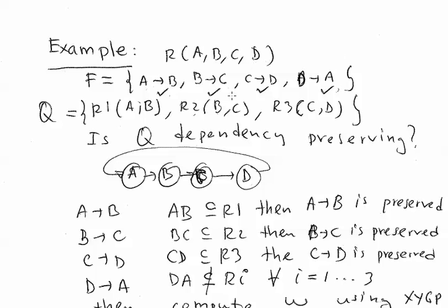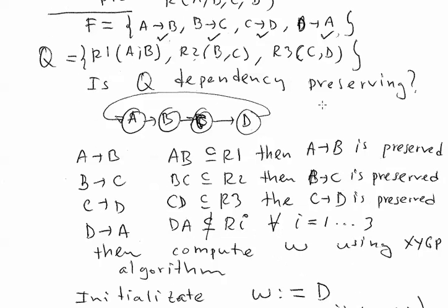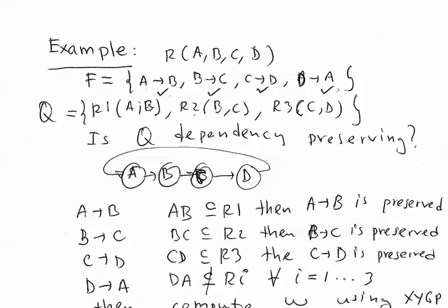However, we don't decide that yet until we follow the algorithm described in the course material. So the question is: is Q dependency preserving? The algorithm indicates there is something we can see with the dependency graph — A determines B, B determines C, C determines D — which means they are all candidate keys in this case. A determines everything, meaning the other attributes B, C, and D.